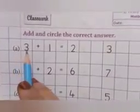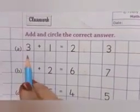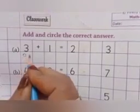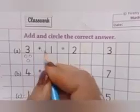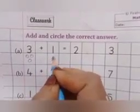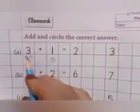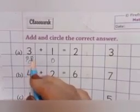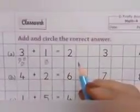Now look at column A. Which number is this? 3. So how many circles will we draw in this box? 3. Right? 1, 2, 3. Which sign is this? Plus. Now which number is this? 1. So 1 circle. Now you will count all the circles together. 1, 2, 3, 4. So our answer is 4.